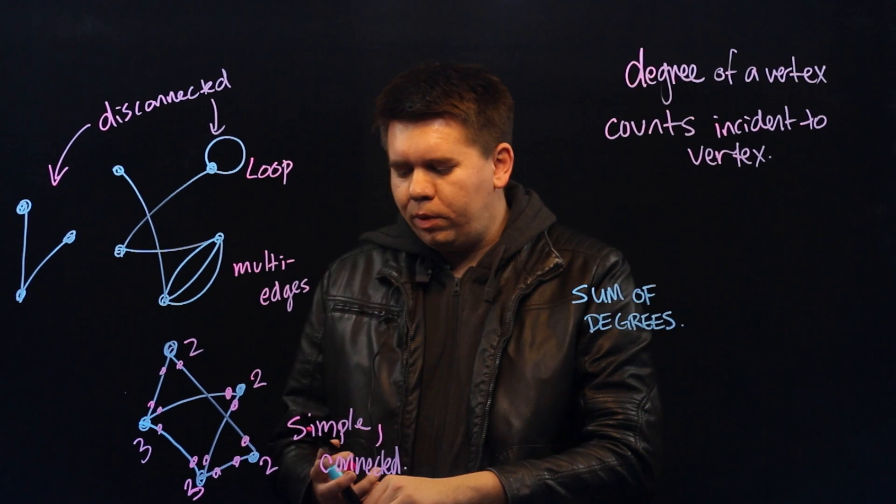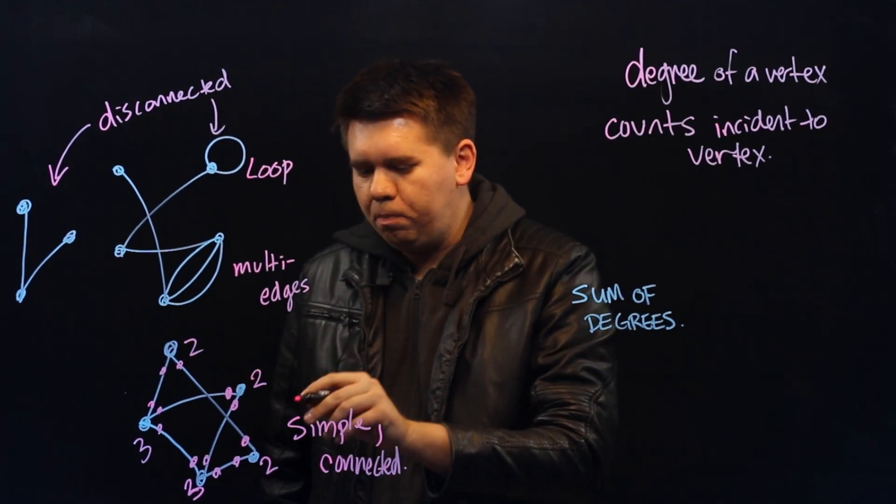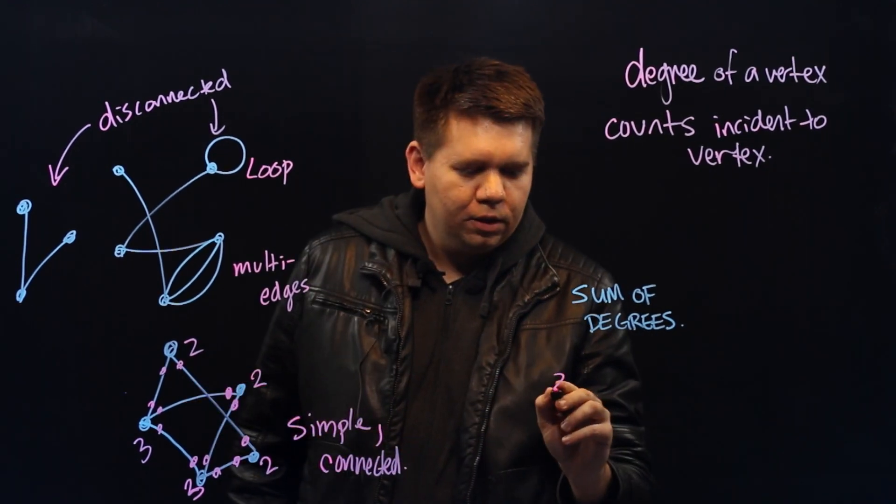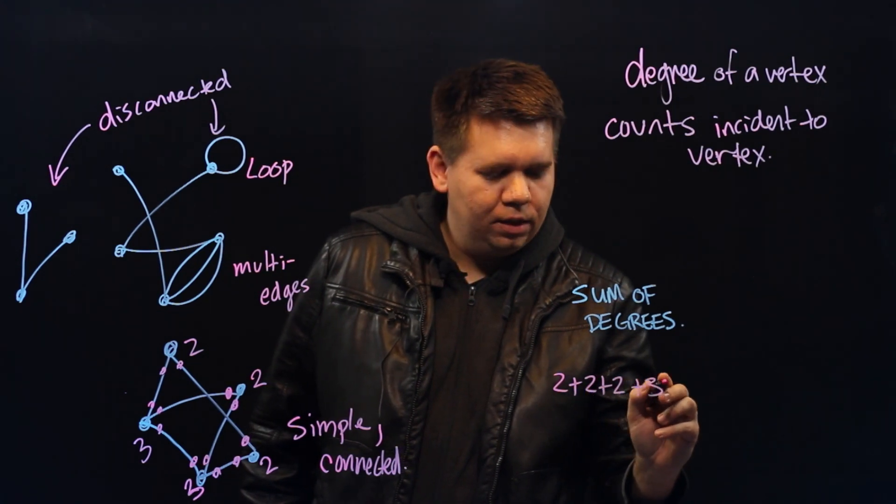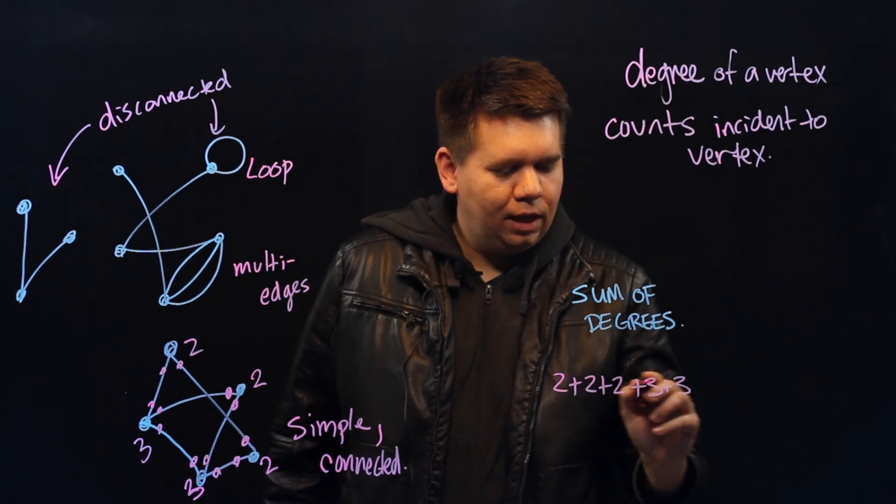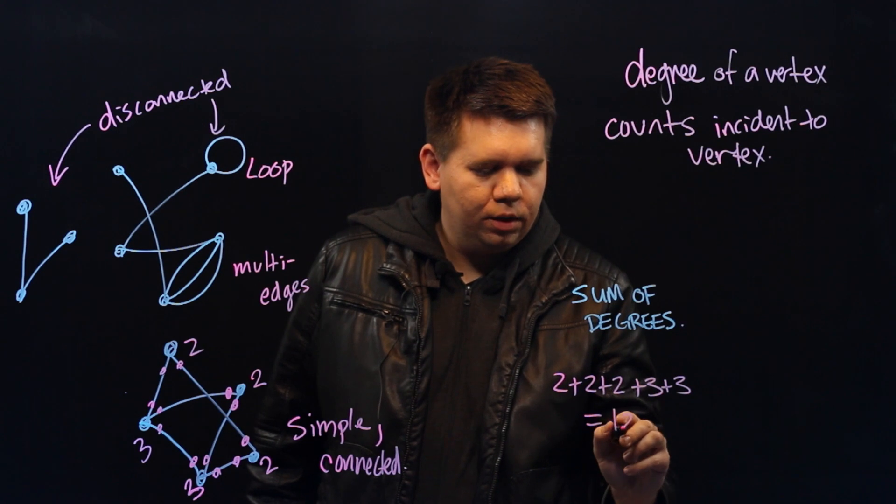How can we do that? Well, here in our example, we just need to count two, plus two, plus two, plus three, plus three. Two, plus two, plus two, plus three, plus three. That's just six and six. That gives you a total of twelve.